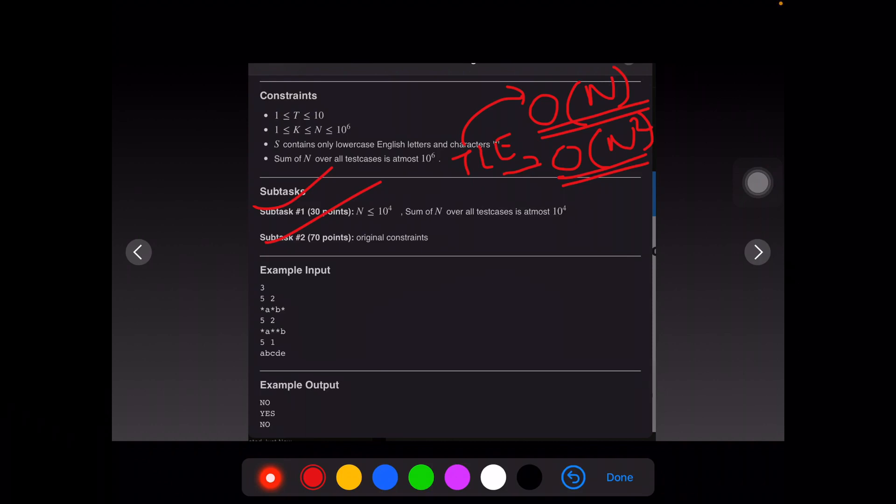Let us understand what the question actually says. Here we are given a string, say this string: star, a, star, star, b. This string is given. The length of this string is 5 and k is given as 2. We'll have to find whether there are two identical consecutive star characters present in this given string.